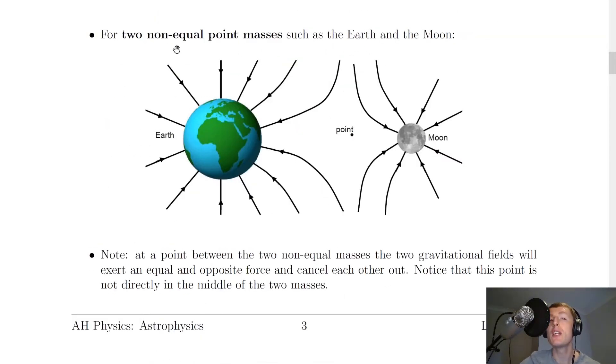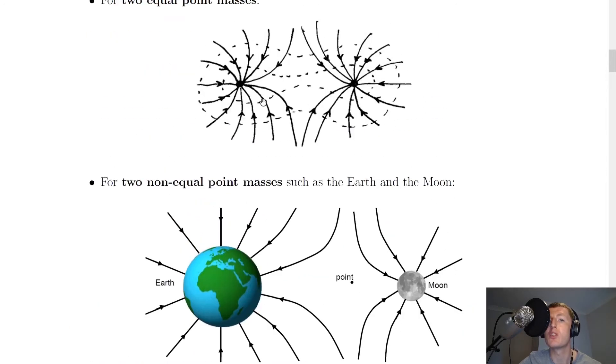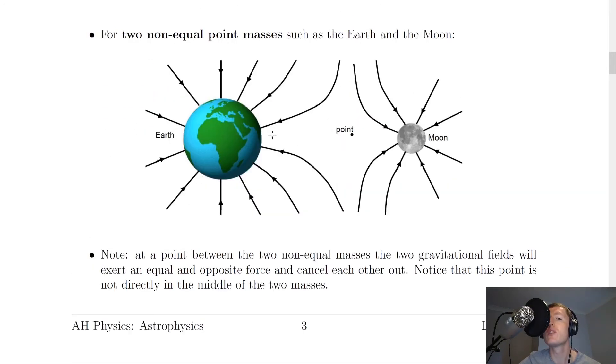However, for two non-equal point masses, the case where the two masses are not the same, such as the Earth and the Moon, it would look something like this. So there's my Earth, the bigger mass, and there's the Moon, the smaller mass. The field lines look very similar to what we've just seen for two equal point masses. However, you'll notice the lack of symmetry in the middle this time. You've actually got more of a space over here towards the Earth than you do over nearer the Moon.